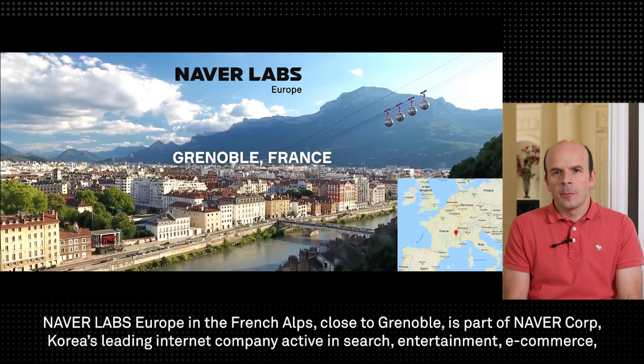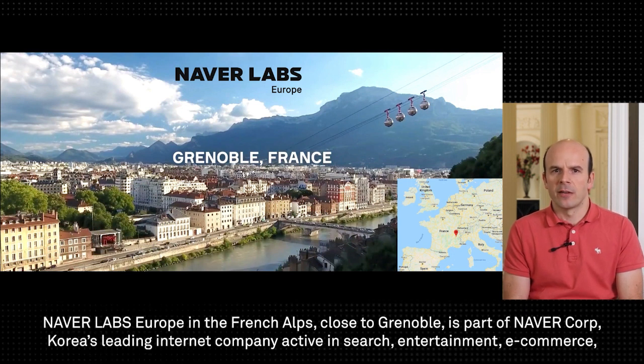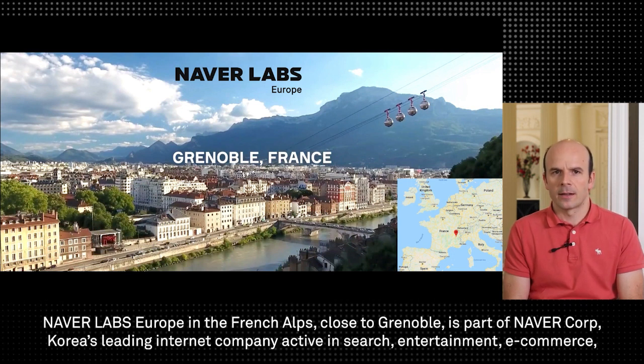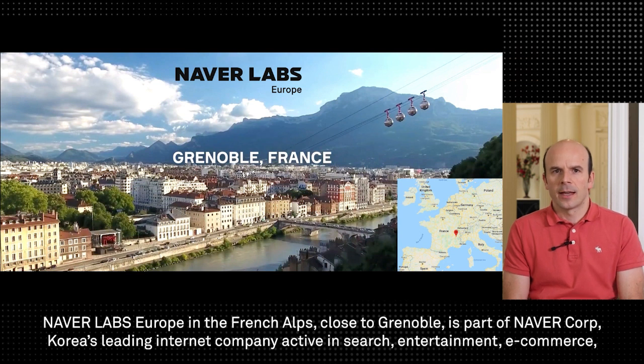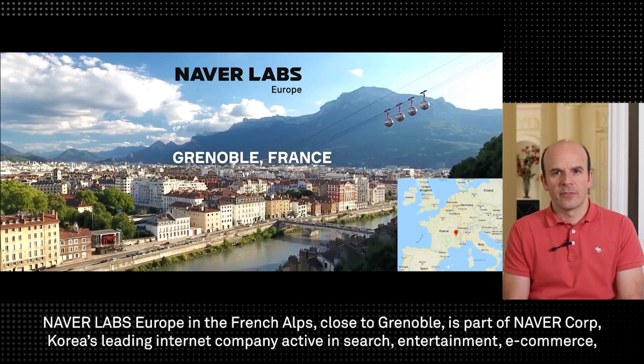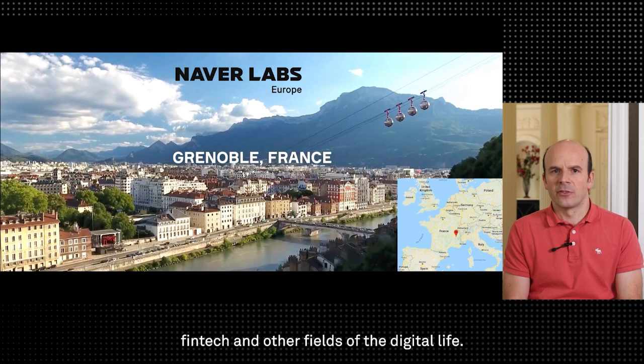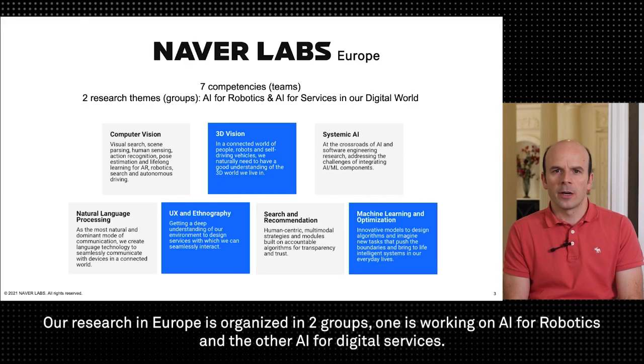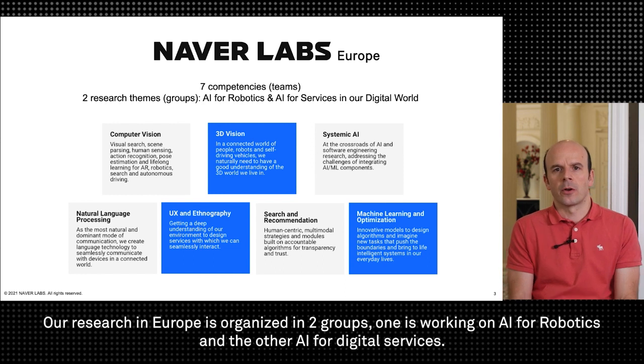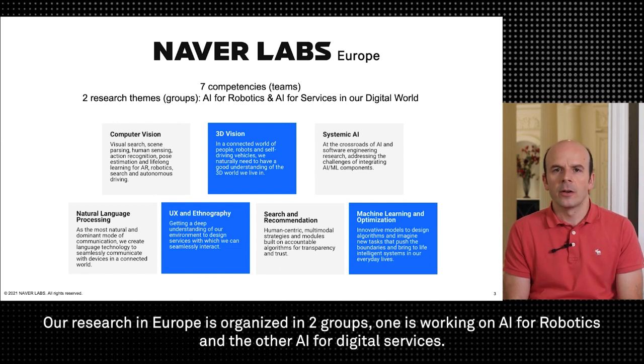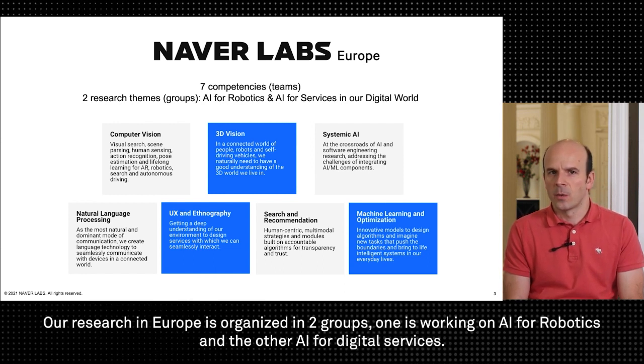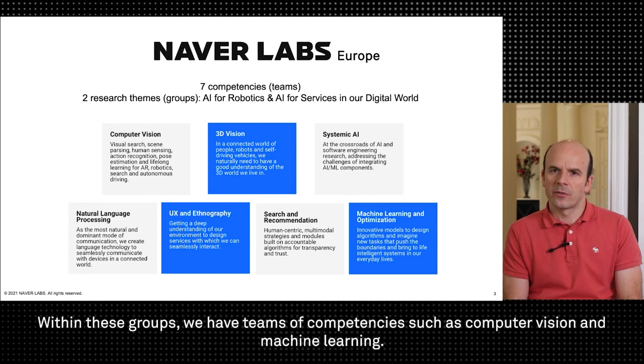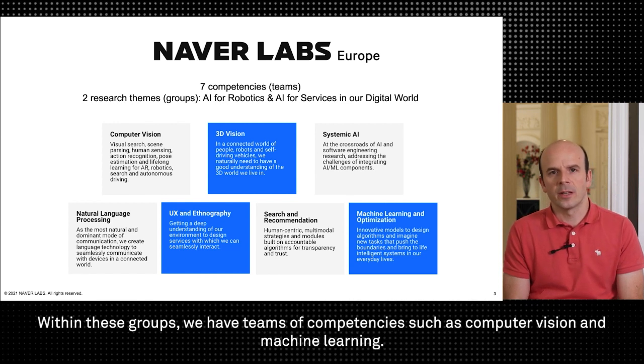Naver Labs Europe in the French Alps, close to Grenoble, is part of Naver Corp, Korea's leading internet company active in search, entertainment, e-commerce, fintech and other fields of digital life. Our research in Europe is organized in two groups, one is working on AI for robotics and the other on AI for digital services. Within these groups we have teams of competences such as computer vision and machine learning.